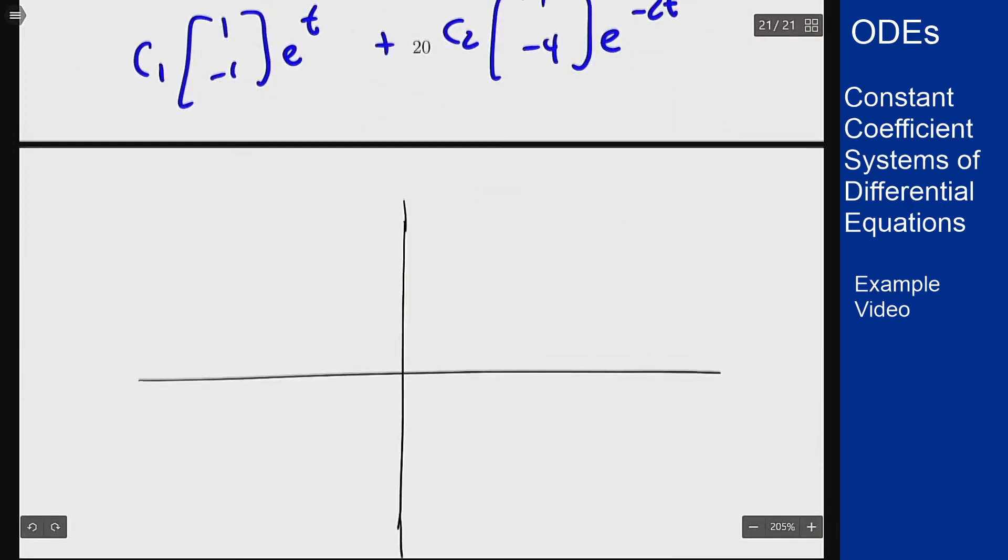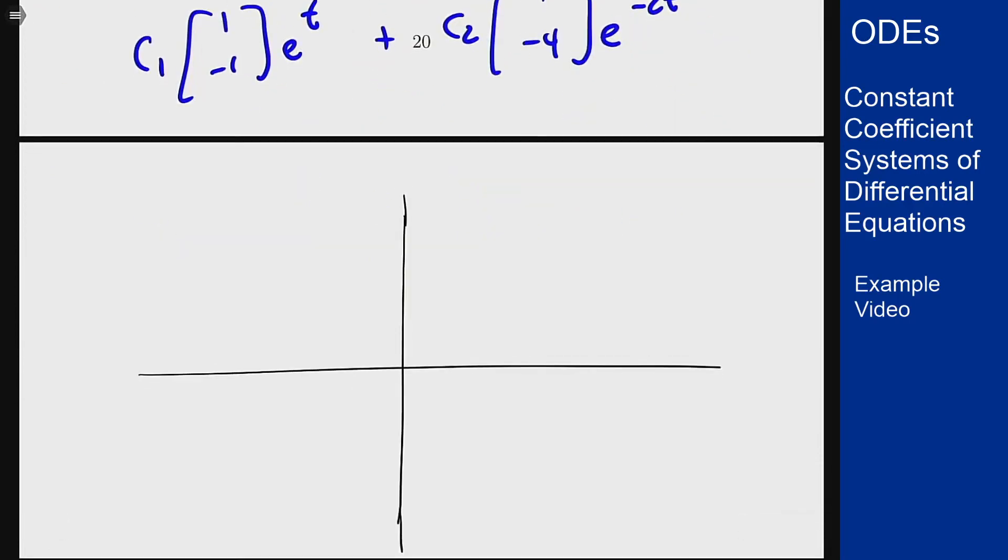We can draw the graph and add in our two straight line solutions. Our first one in purple is (1, -1)e^t along the line y = -x. We draw the vector (1, -1) and extend that into a straight line, and because that's e^t this will go away from the origin as time goes on.